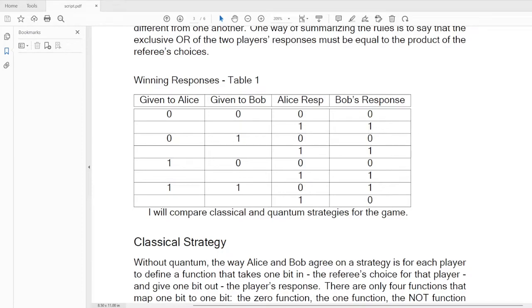So finally, we're going to describe the game. In this game, Alice and Bob need to cooperate to win as many rounds as possible. They are not allowed to communicate after the game has started, so they must agree on a strategy before the first round. To win a round, Alice's and Bob's responses must be identical to one another unless the referee gives them both ones. In that case, Alice's and Bob's responses must be different from one another.